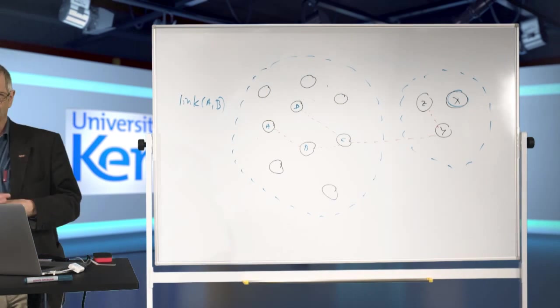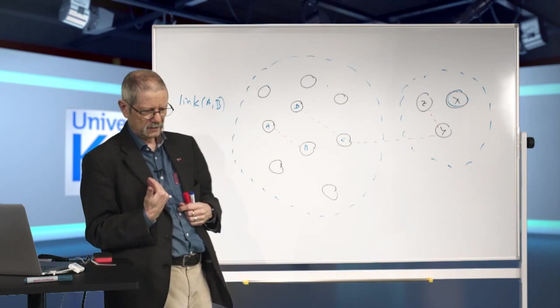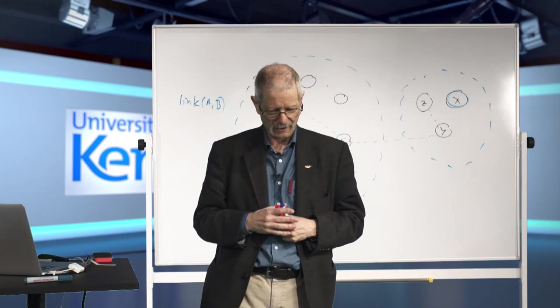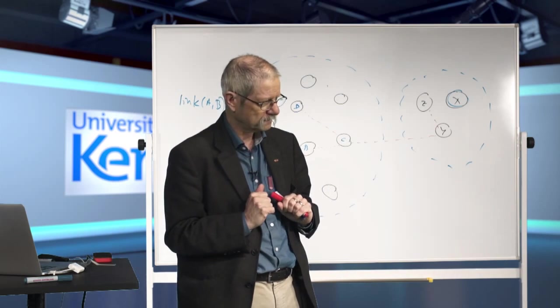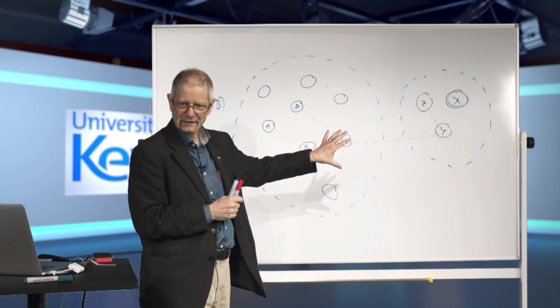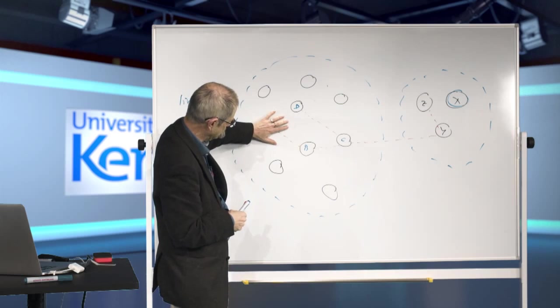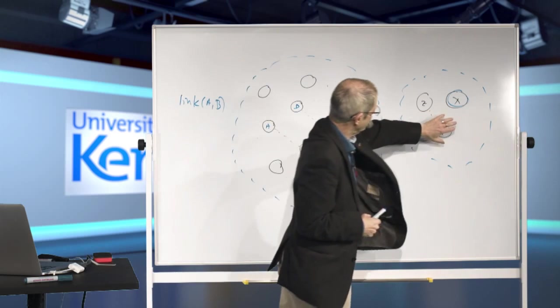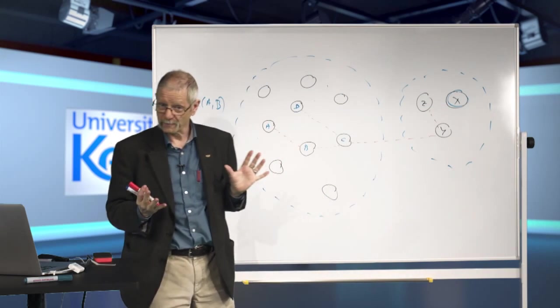And the normal behaviour of a process, if it gets one of these error signals, is to die itself. So what happens in a system that's been linked together like this? If any of these processes A, B, Y or Z dies, then all of them will die.